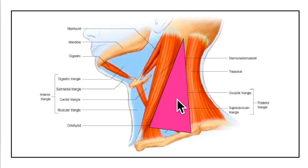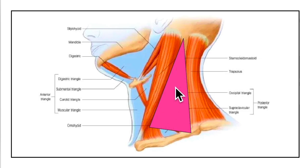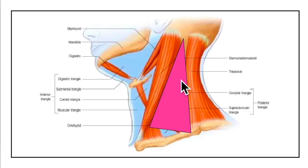Now let's look at the roof of the posterior triangle of the neck. The roof is formed by the investing layer of the deep cervical fascia. There is a superficial fascia that lies above it, and we will be learning about the structures that can be seen in the superficial fascia.